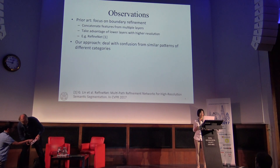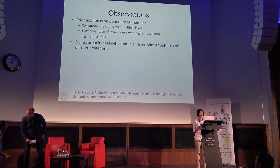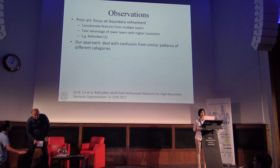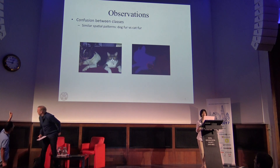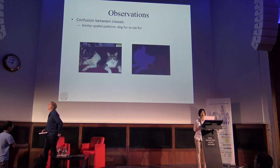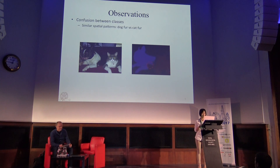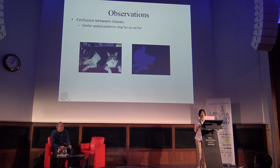When addressing this problem, we found some issues about confusion from similar patterns. To better solve this semantic segmentation problem, we address it from a different view. Here I have a visual example: if you look at this dog and cat image, they are very close to each other. Especially at the regions where the two are neighbors, those regions are far away from the dog face and the cat face, and they are very similar in terms of texture. That's why the previous segmentation network will incorrectly classify the dog fur as cat fur.